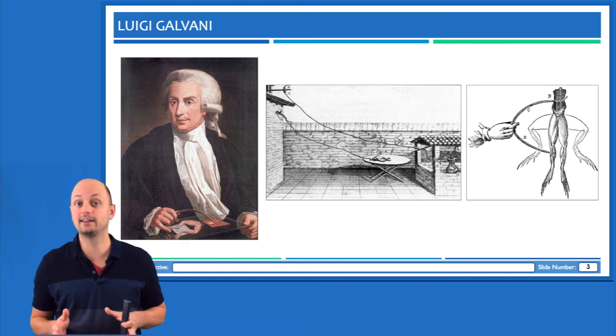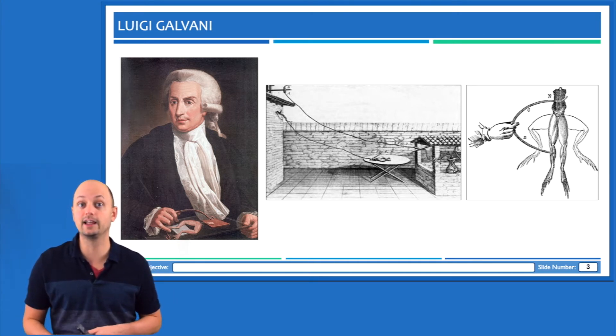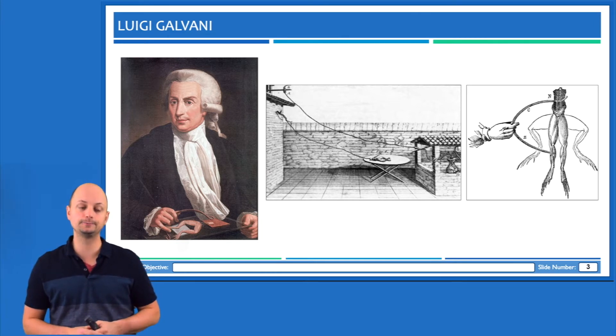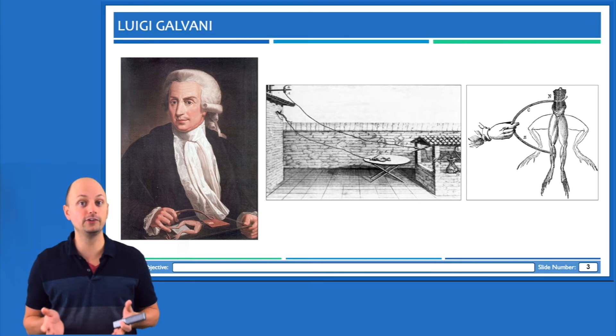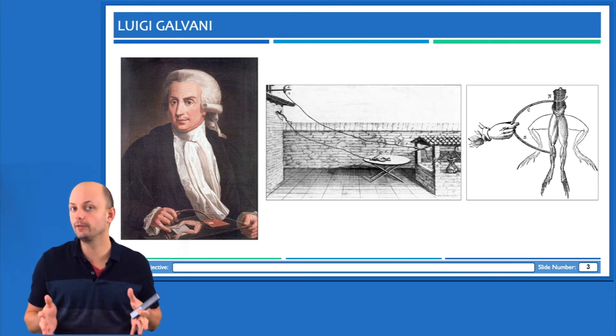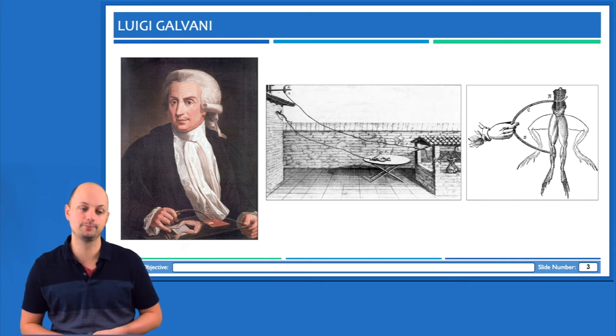Now, Galvani ultimately settled the debate by connecting a lightning rod on the roof of his lab to the sciatic nerve in the leg of a frog that he had dissected out. And when lightning struck the rod, the electrical current passed through the wire into the frog leg, and that caused it to contract. And from that, he concluded that muscle had what he called bioelectricity, which was the ability to pass an electrical current. Now, his work had a couple of interesting consequences. The most important is that it launched the field of electrophysiology.